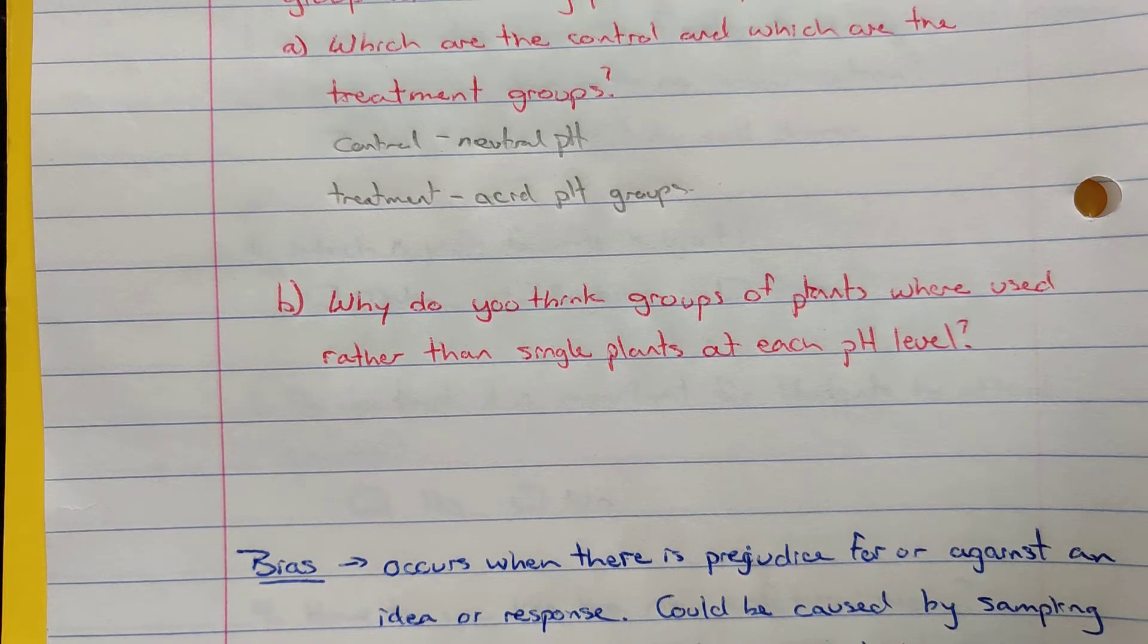And then the second part here says why do you think that groups of plants were used rather than single plants at each pH level? By having numerous plants we can help reduce the effect of other factors.